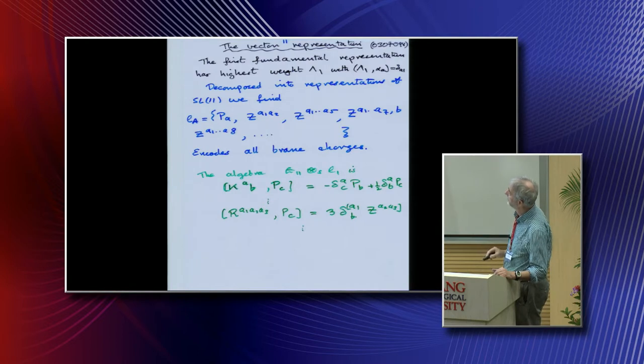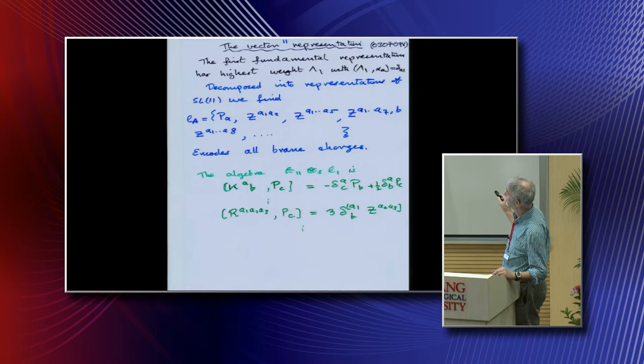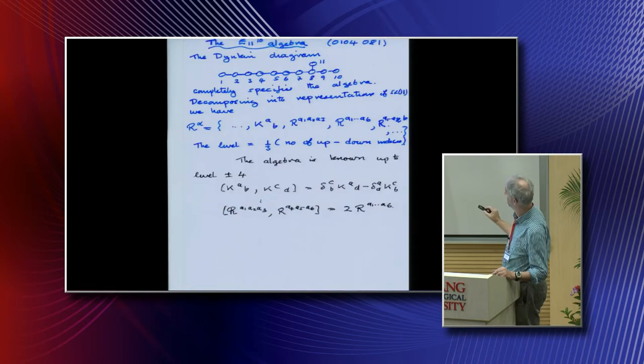Remember, I'm going to do the non-linear realization of G, semi-direct product L. What I'm going to take is the representation, the fundamental one associated with node one. That just has a highest weight whose scalar product with the alphas is zero, these are the simple roots, except if it's one. It's the representation associated with that node. If I delete this one here, it would be the representation associated with these ten dots, SL11, and that's a vector.